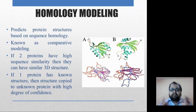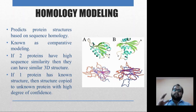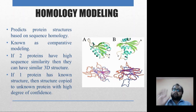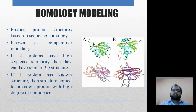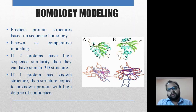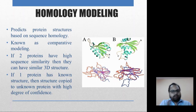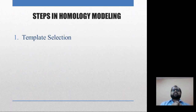If two sequences are 95% similar, then 95% of the structure will also be similar. The reason is that the protein structure is derived from the sequence — if your sequence changes, so will the structure of the protein. So if one protein has a known structure, then the structure can be copied to an unknown protein with a high degree of confidence. This is essentially what homology modeling does.